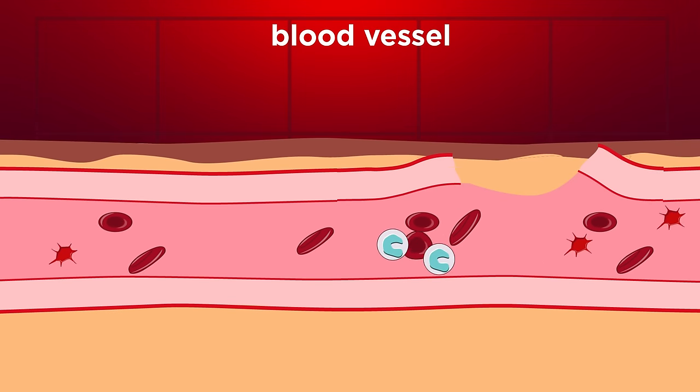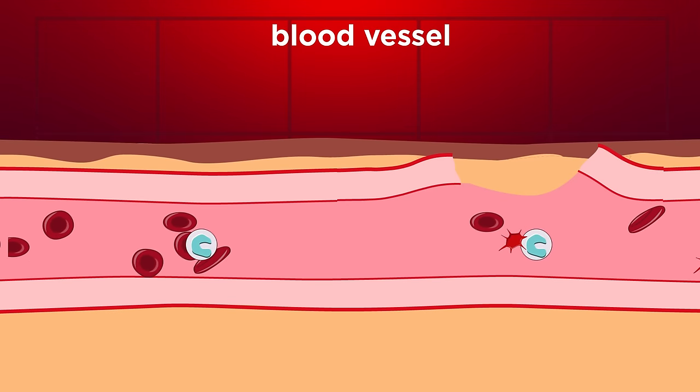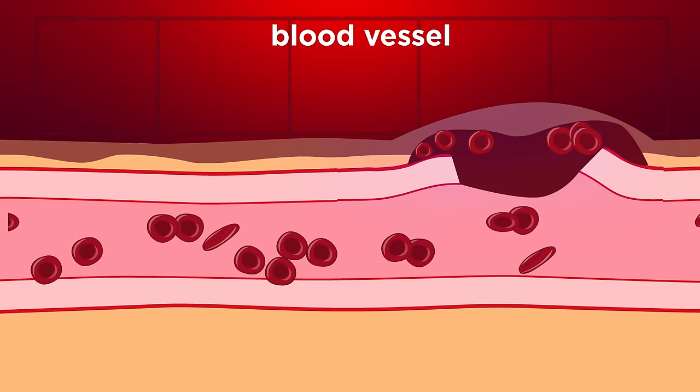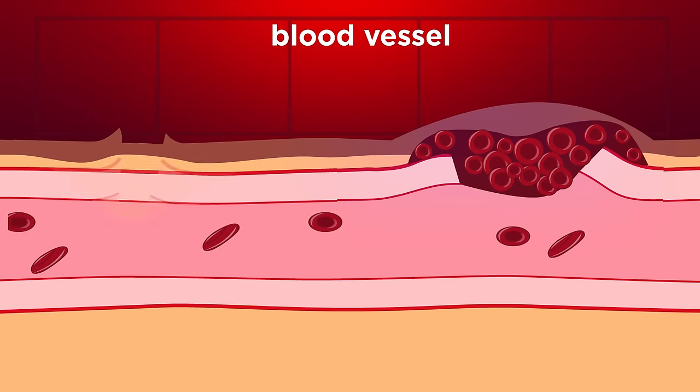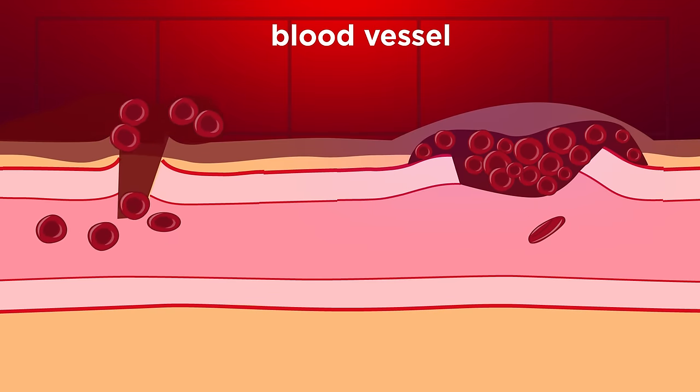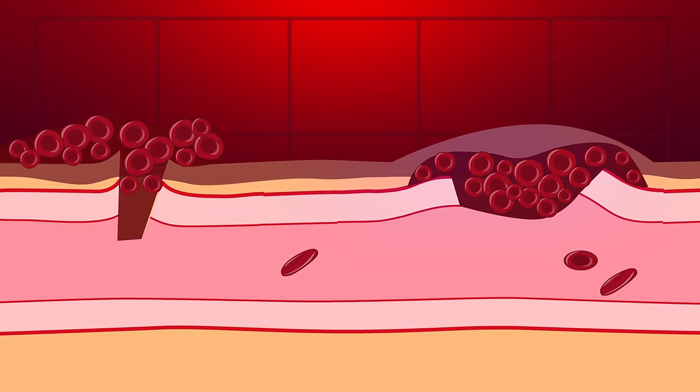When we injure ourselves, we can damage the blood vessels just below our skin. This can cause blood to either leak into our tissue and form a bruise, or if the skin is broken, to openly bleed. To prevent these horrible things happening, blood clotting occurs.